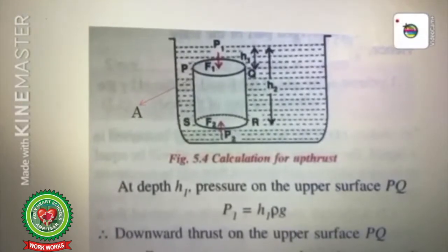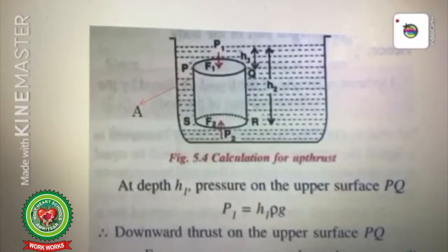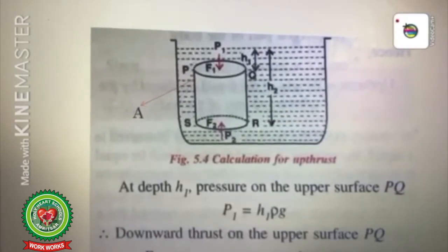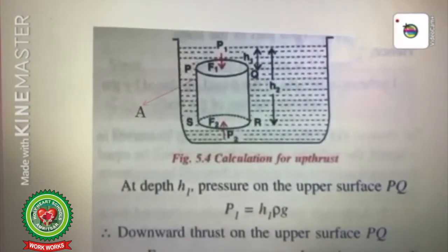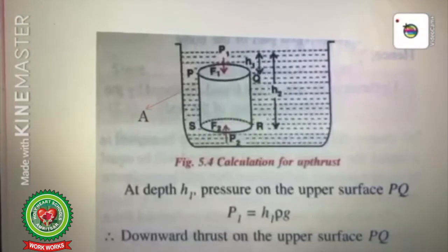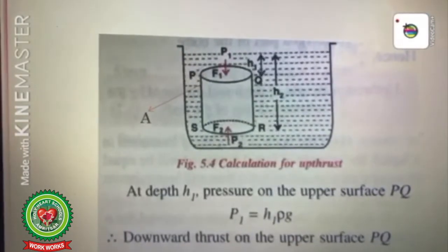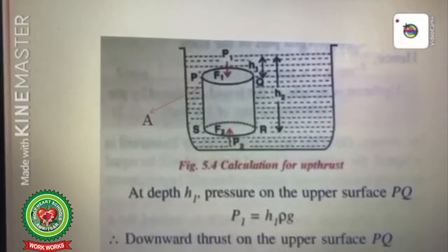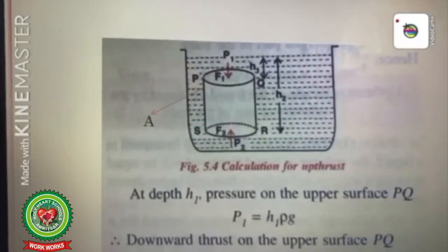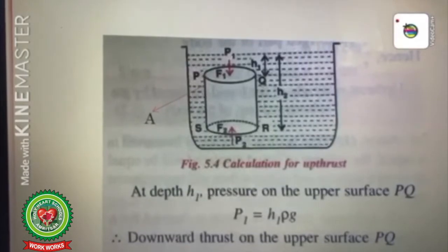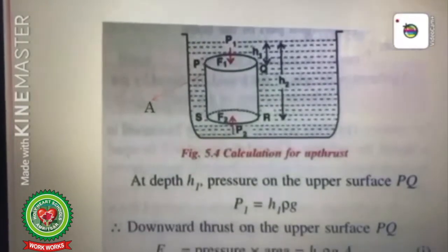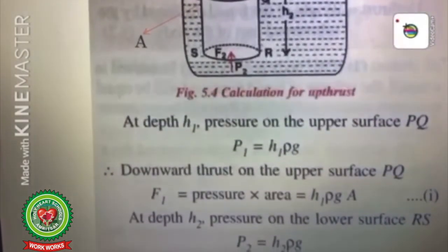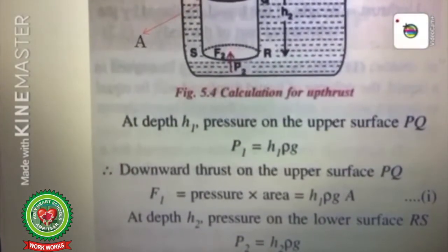Let us start with the derivation. At depth h1, pressure on the upper surface PQ: P1 = h1·ρ·g. We know that the formula for pressure at a depth is P = h·ρ·g, where h is the depth, ρ is the density of the liquid, and g is acceleration due to gravity. So P1 = h1·ρ·g. The force F1 = pressure × area.